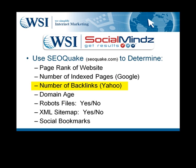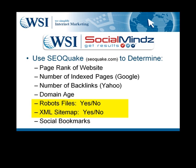Number of backlinks — this is the amount of people pointing links back to your website. Domain age: SEOquake will pull up this information on any website and determine how old that website has been around. From a search engine perspective, this is very important because they give credibility to sites that have been around for a longer period of time. The last few things: SEOquake will also tell you if the website has a robots.txt file, and if they have an XML sitemap, which allows the search engines to easily crawl and understand all the different pages of the website.